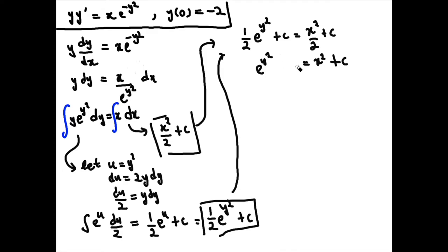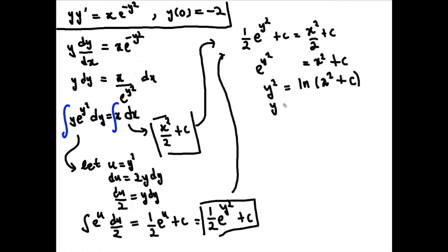Now we need to solve for y. We can take the natural log of both sides. Taking the log of e to the something just gives us the power, so we get y squared equals the natural log of x squared plus C, and therefore y equals the square root of the natural log of x squared plus C.